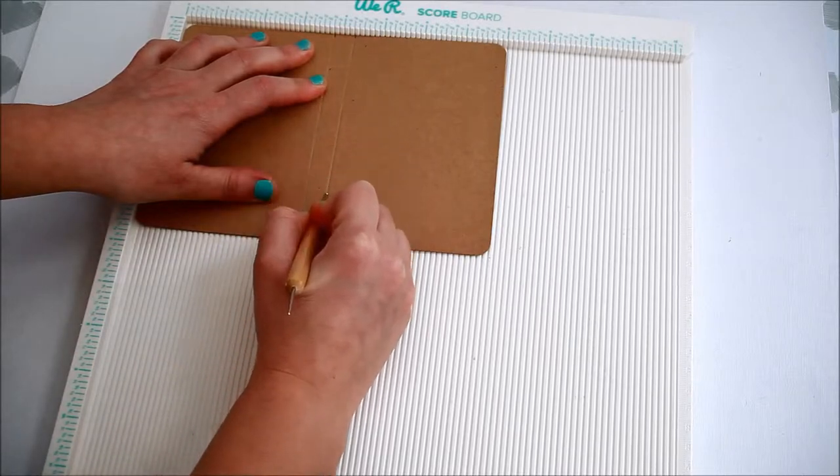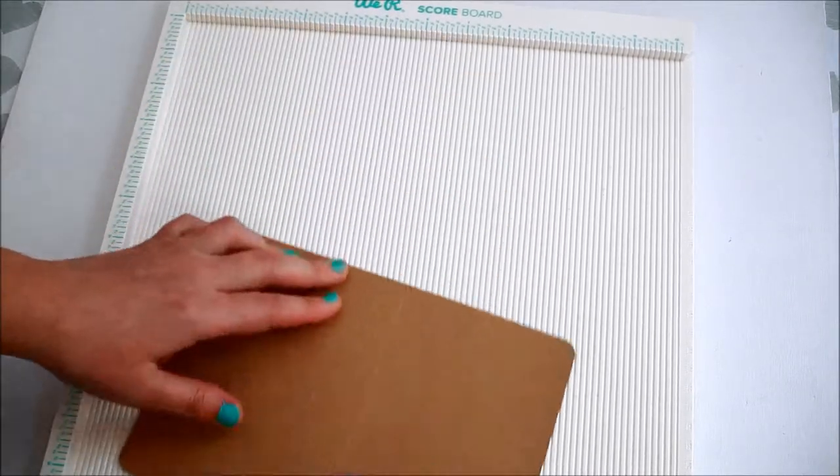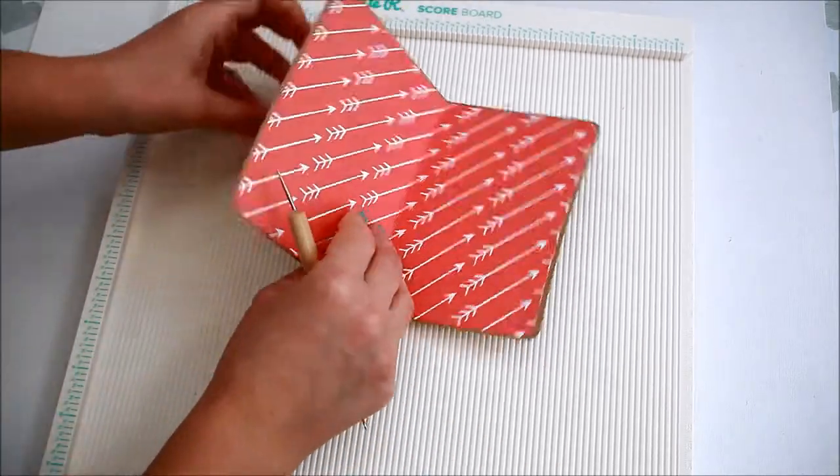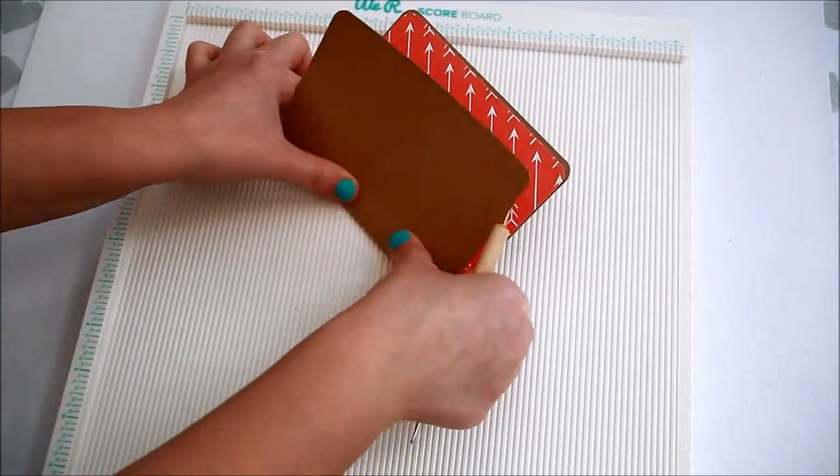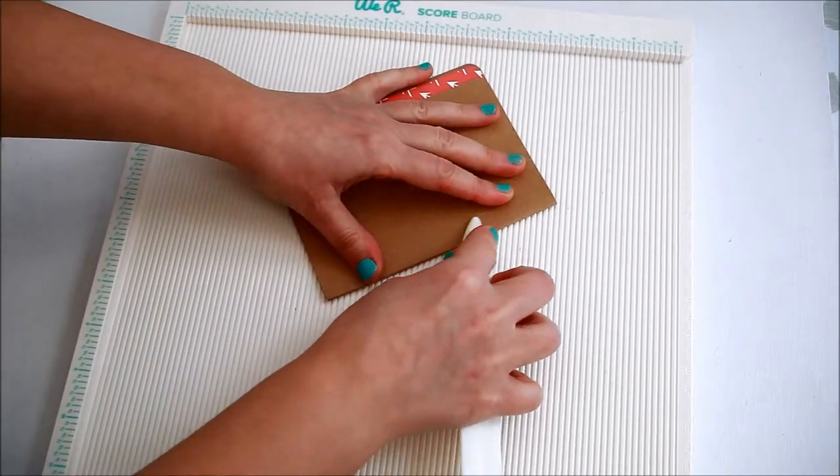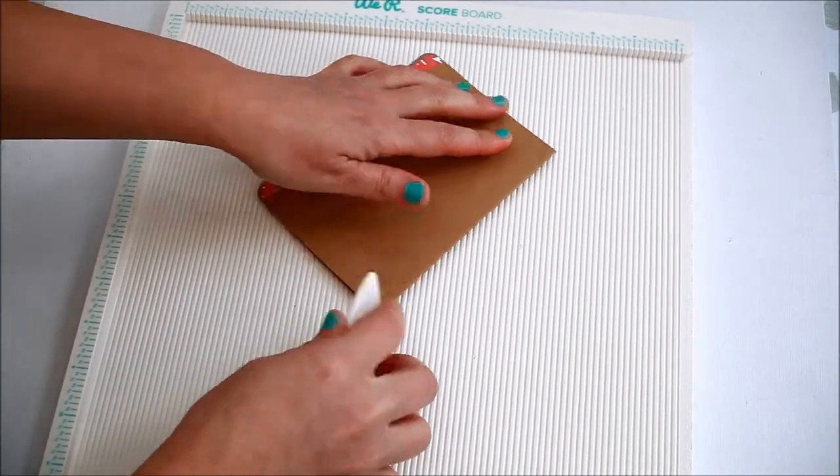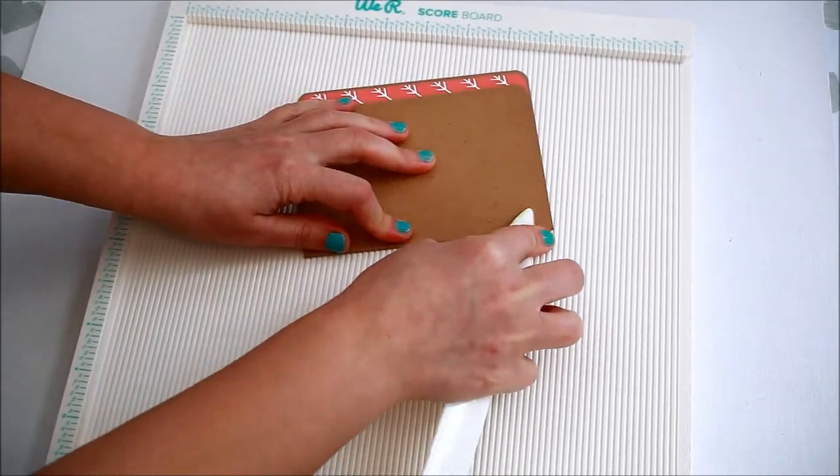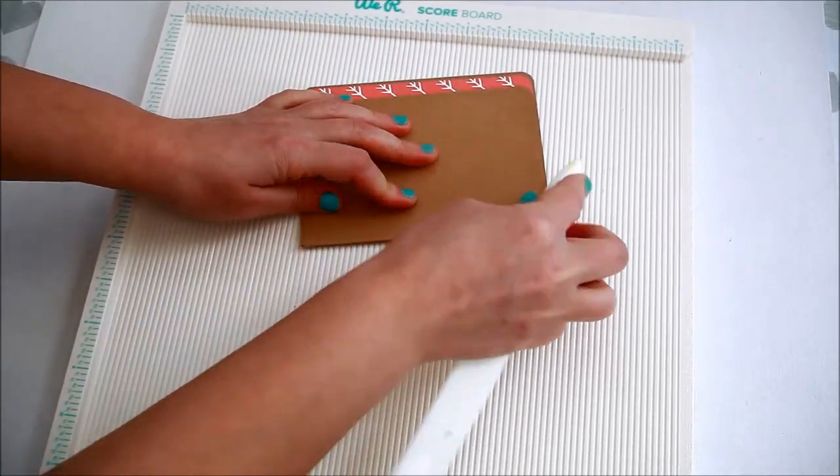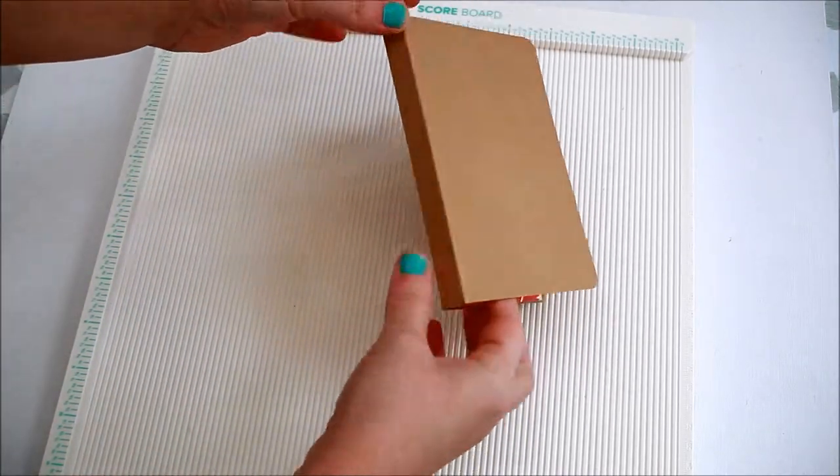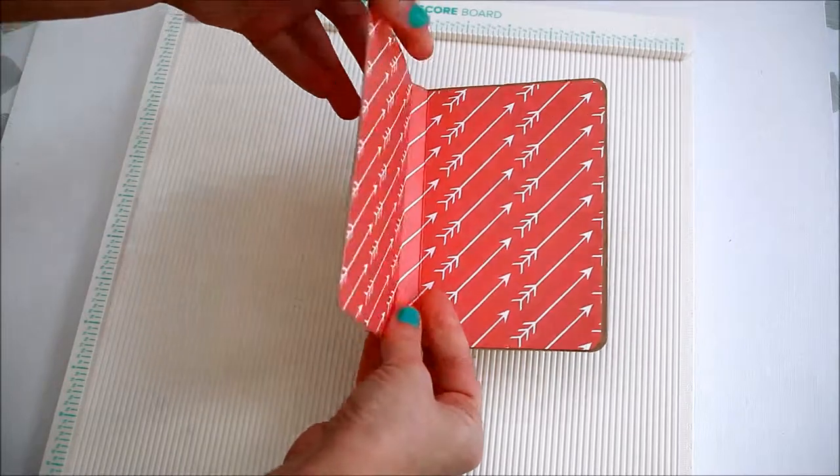Score at three and three-quarter inches and four and a quarter inches, fold and burnish. Now you have the base of the post-it holder.